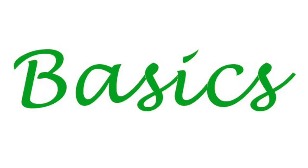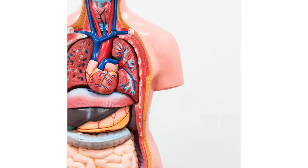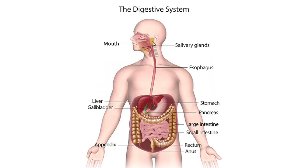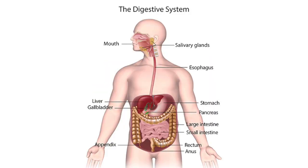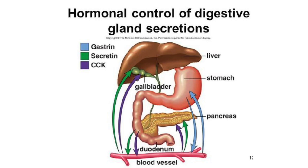So now that we have discussed the basics of the digestive system, let's move on to the anatomy of the system. To be more specific, our GI tract consists of the mouth, esophagus, stomach, small intestine, large intestine, rectum, and anus. Also, the liver, gallbladder, and pancreas play roles with digestion and secretion too.